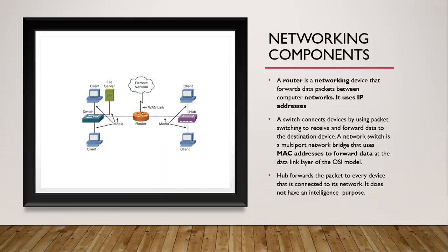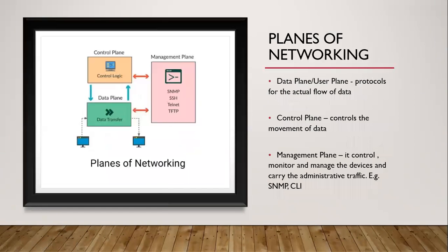So after getting the knowledge of the networking components, let us see the planes of networking. We have three planes: data plane, control plane, and the management plane. The data plane is basically used to transfer the data between the devices and it deals with the entire processes involved in forwarding the packets from source to destination. It is also known as the user plane, carrier, or bearer plane.